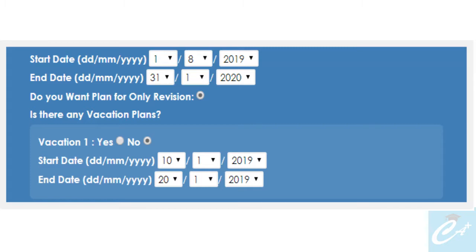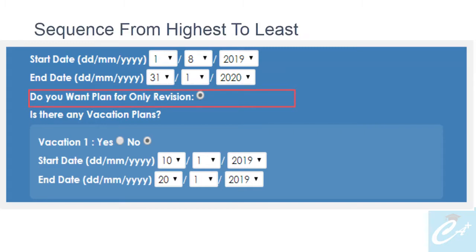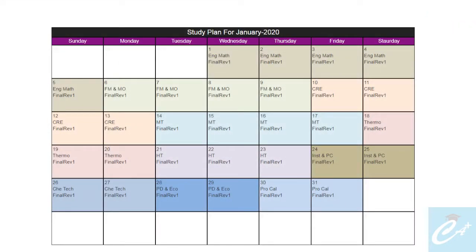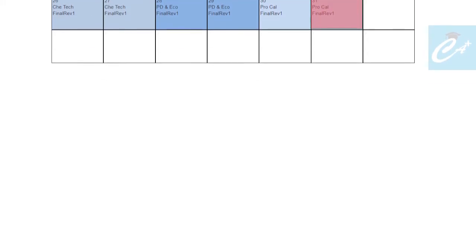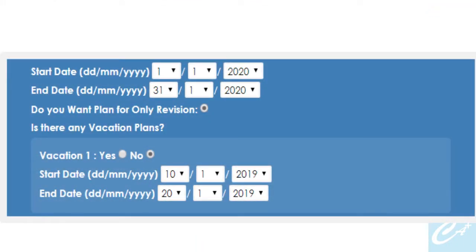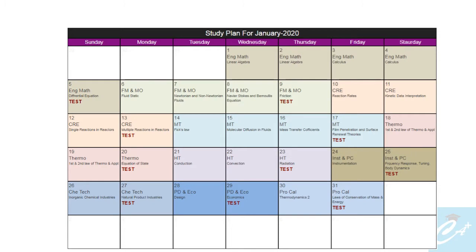Now let's discuss what the revision option is all about. If you come to know about this tool really late and have very little time left, or you have already done some preparation and want to use this tool for revision, then you can choose this option and click for calendar. You will get the plan with subjects in sequence from highest to least weightage. You can also choose this option when you are in the revision section of our plan. So for example, our revision will start from 1st January and end on 31st January 2020. Choose start date as 1st January, end date as 31st January, choose the revision option, click submit for calendar, and you will get the revision plan.